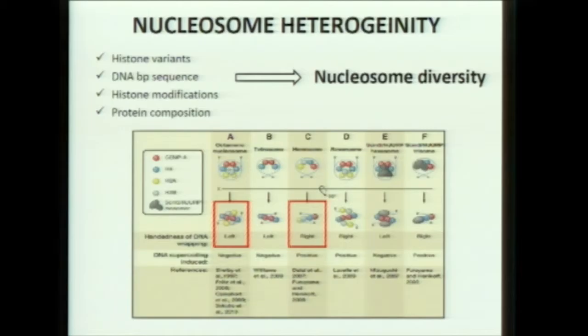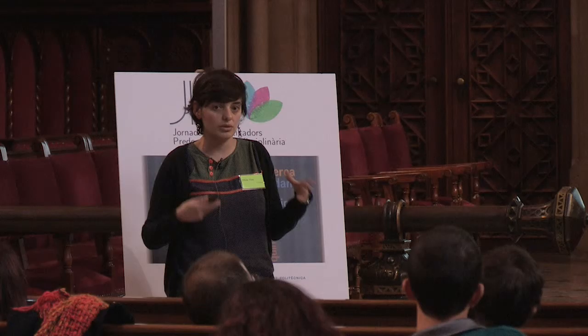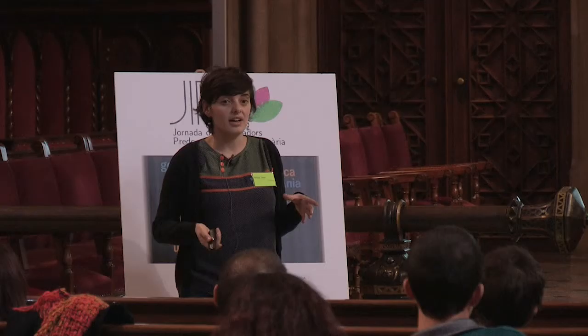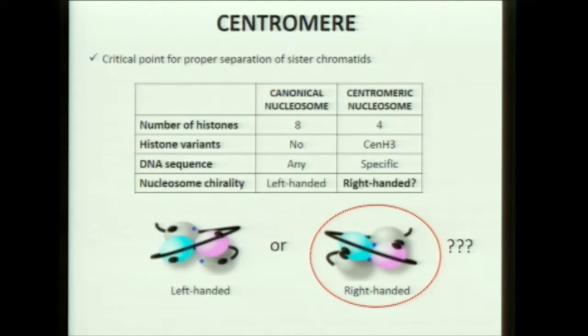Until a few years ago, it was thought that the left-handed nucleosome was the only possible nucleosome structure, but different studies have shown that this is not true. We have histone variants, histone modifications, and different DNA sequences that result in different nucleosome structures. These nucleosome structures cause changes in the chromatin architecture and this has an impact on all chromosomal processes.